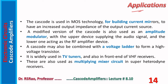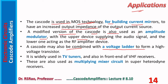Regarding applications: cascode is used in MOS technology for building current mirrors to achieve increased output impedance of the output current source. A modified version of cascode is also used as an amplitude modulator, with the upper device supplying the audio signal and the lower one acting as an RF amplifier device. Cascode may also be combined with a voltage ladder to form a high-voltage transistor. It is widely used in TV tuners, front-end VHF receivers, and as a multiplying mixer circuit in superheterodyne receivers.